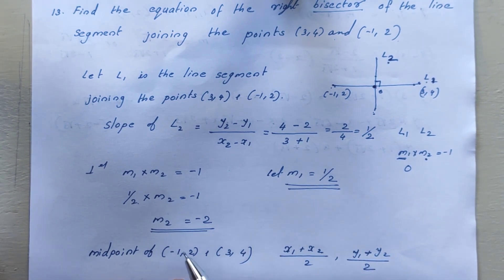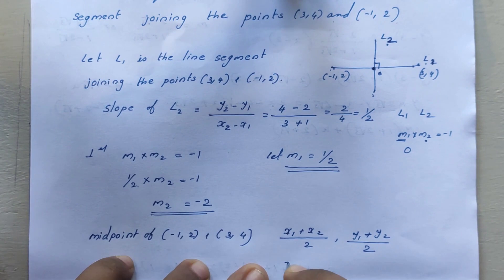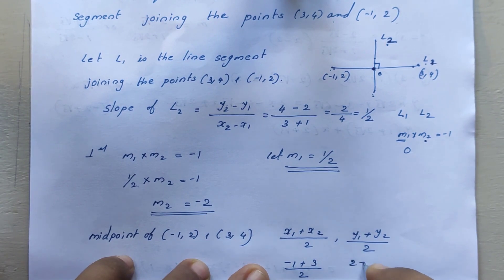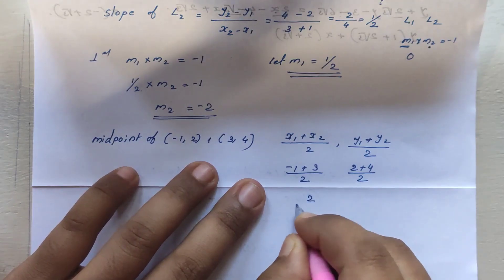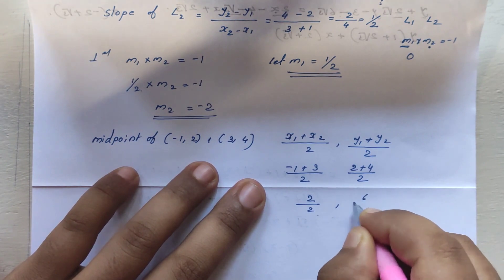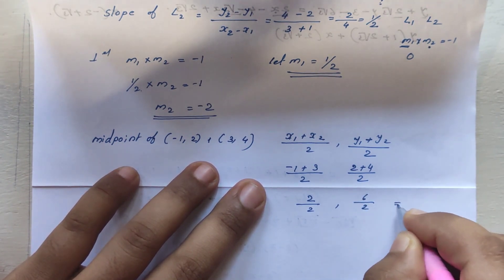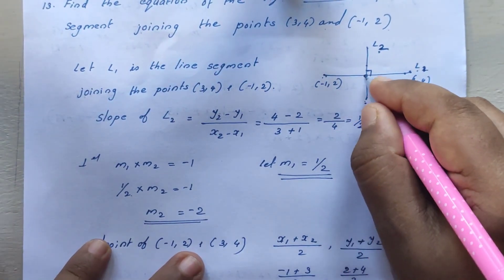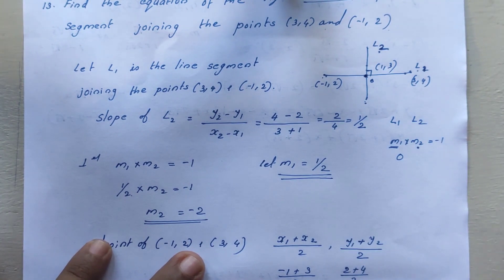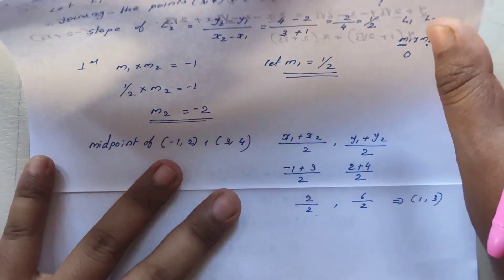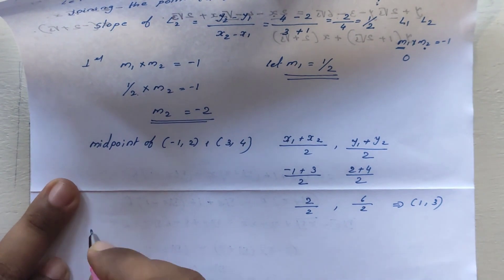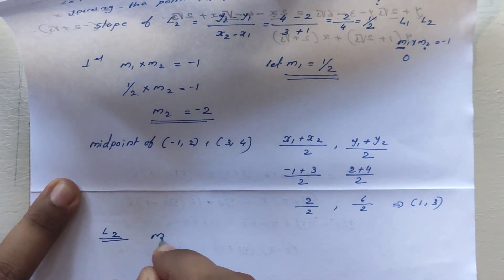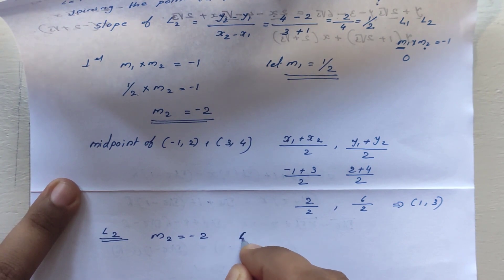Now find the midpoint of the segment joining (3,4) and (-1,2): midpoint = ((x1+x2)/2, (y1+y2)/2) = ((-1+3)/2, (2+4)/2) = (1, 3). So the midpoint is (1, 3) and the slope is m2 = -2.